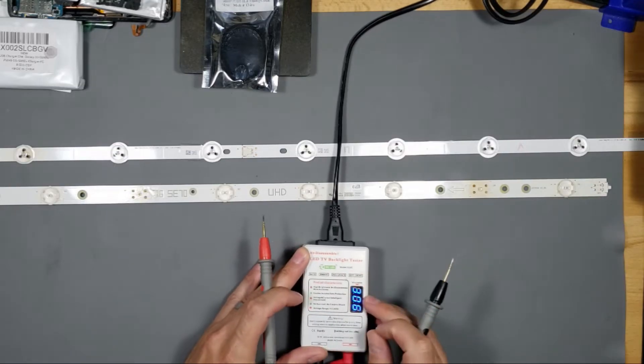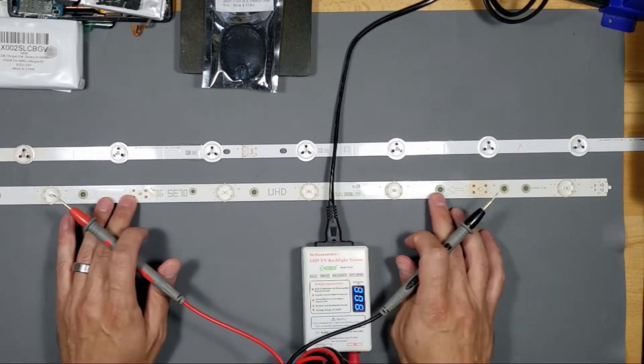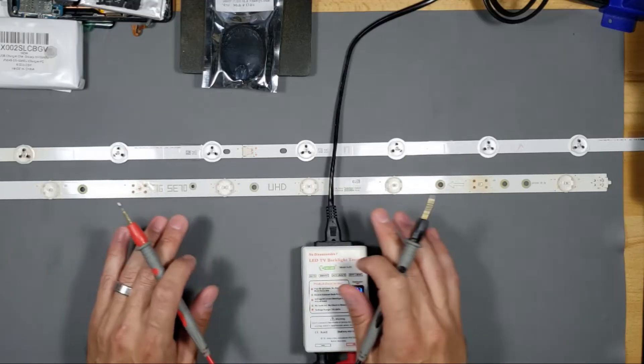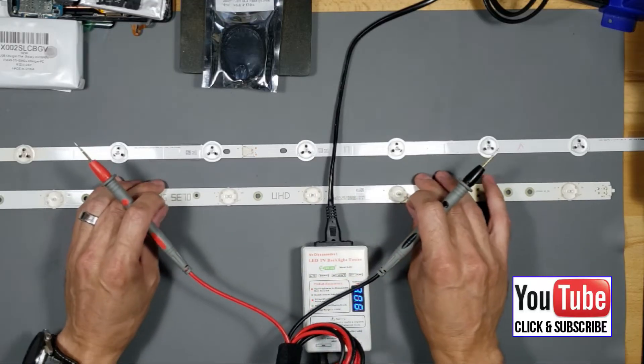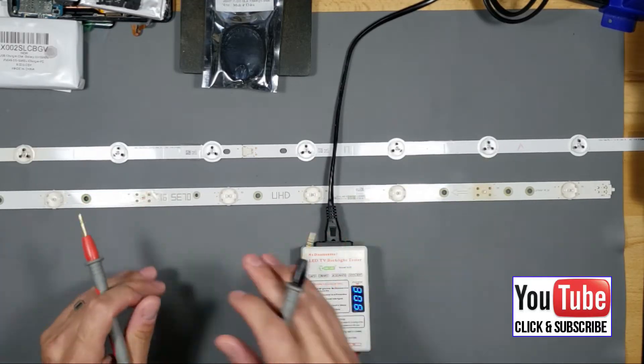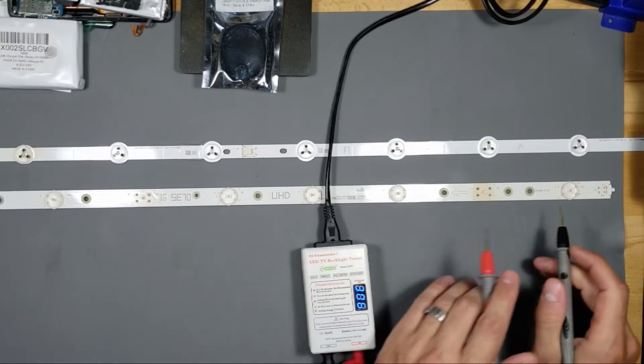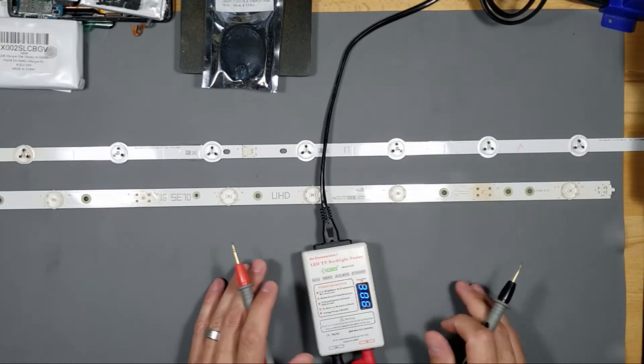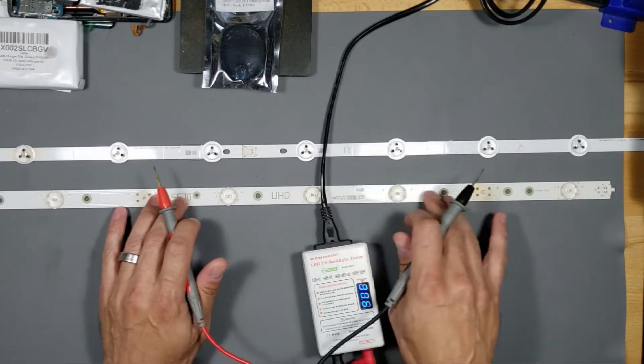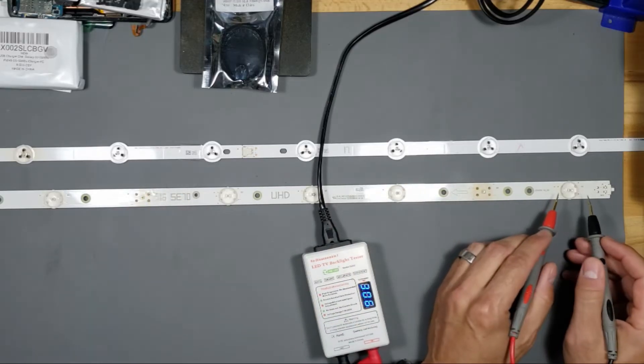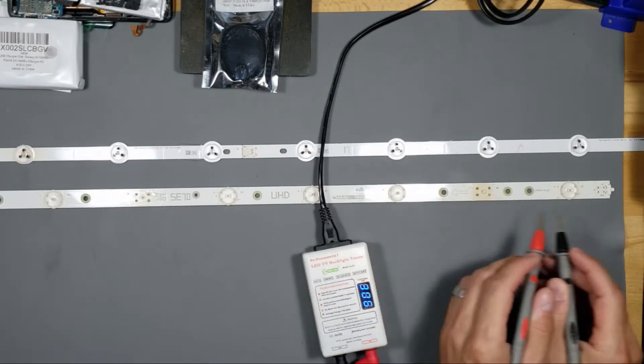And we are not seeing any illumination. So what this tester does, it sends voltage through this LED strip and it illuminates all the LEDs. And the ones that don't illuminate are the bad ones. So if the whole strip does not light up, it doesn't mean all the LEDs are bad. From this point on, you have to test each individual LED.